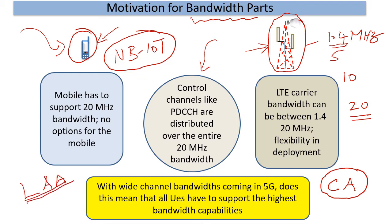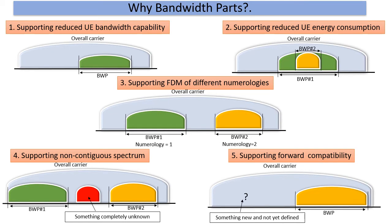Keeping all this in mind, let us see a big picture of where bandwidth parts can help. Bandwidth parts can help from multiple perspectives. The carrier bandwidth can keep on expanding while the users could have smaller bandwidth based on application, maybe based on cost, complexity, etc. They could also dynamically move to smaller bandwidths based on the need, energy consumption, and so on.